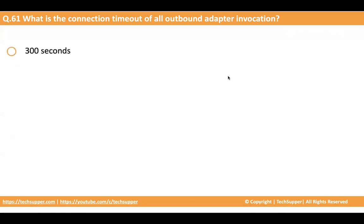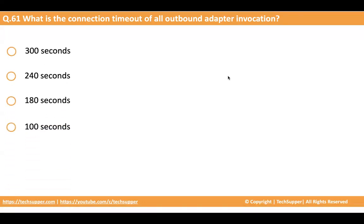The options are 300 seconds, 240 seconds, 180 seconds, and 100 seconds — equivalent to 5 minutes, 4 minutes, 3 minutes, and 100 seconds respectively. The correct answer is 300 seconds. These limits are as of the time of this video and are subject to change in future releases of Oracle Integration, but this timeout has remained the same for the last five to six years. These are hard limits which you cannot change.